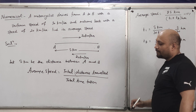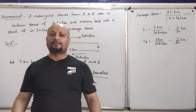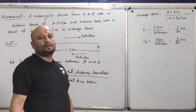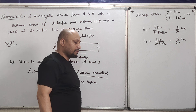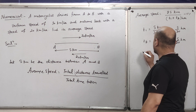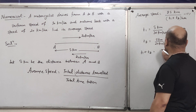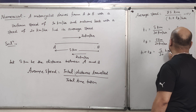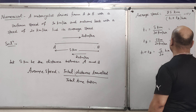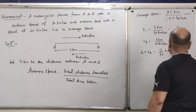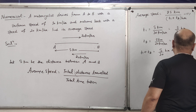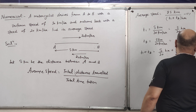We have found T1 (time from A to B) = S/30 hours, and T2 (time from B to A) = S/20 hours. So total time T1 + T2 = S/30 + S/20. Taking LCM as 60: this becomes 2S/60 + 3S/60 = 5S/60 hours. That is the total time taken by the motorcyclist for the complete journey from A to B and back to A.